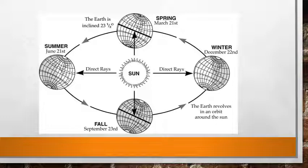The orbit of the earth around the sun is elliptical or oval in shape. The positions of the earth in each of the four seasons shows that seasons are reversed between the two hemispheres due to the inclination of the earth's axis. When the northern hemisphere experiences summer, the southern hemisphere experiences winter, because during summer the northern hemisphere is tilted towards the sun and the southern hemisphere is tilted away from the sun.